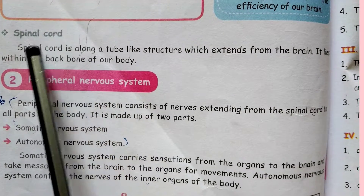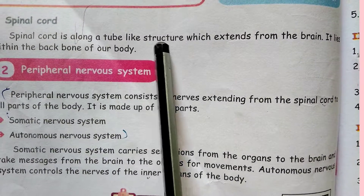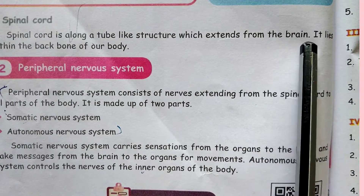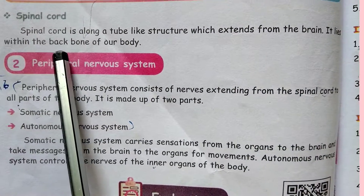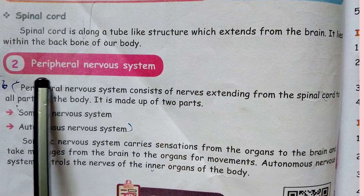Spinal cord: The spinal cord is a long tube-like structure which extends from the brain. It lies within the backbone of our body.